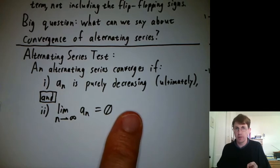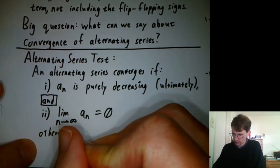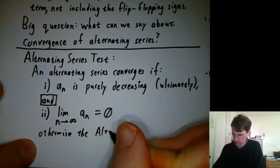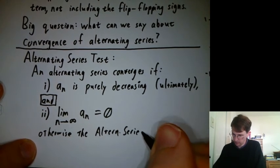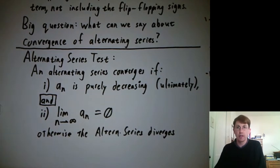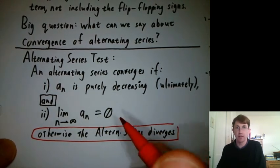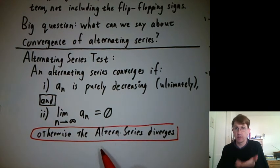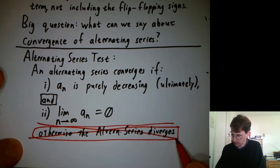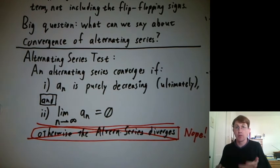So what might you guess about divergence then? You might guess that we would then say otherwise the alternating series diverges. But it turns out that that's not true. There are cases where at least one of these hypotheses is not satisfied, but the alternating series still converges. So we're going to cross that out and write nope. So the alternating series test can prove that a series converges, an alternating series converges, but it never can prove that an alternating series diverges.